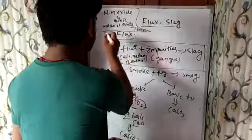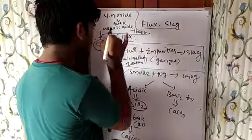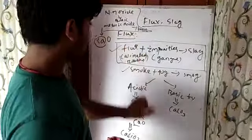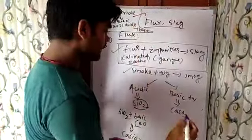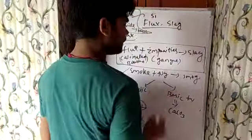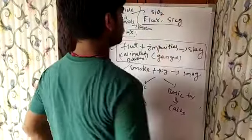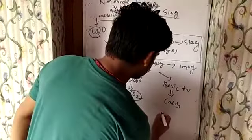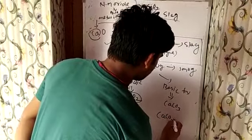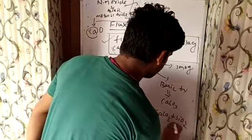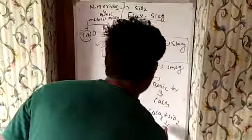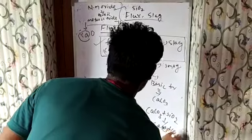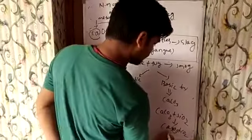Metallic oxide means a metal-containing oxide. Here, calcium metal-containing oxide is CaO, which is basic in nature. While non-metallic oxide — silicon (Si) is a non-metal. When Si reacts with O2, that is SiO2, which is a non-metallic oxide. So CaSiO3 is produced along with CO2, and this is known as slag.